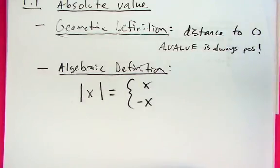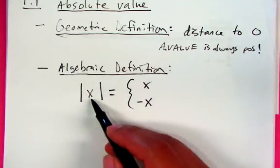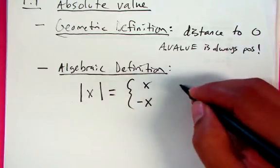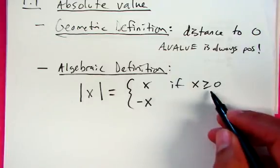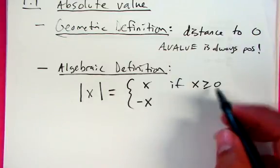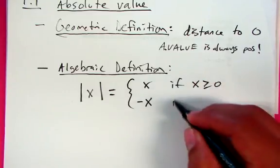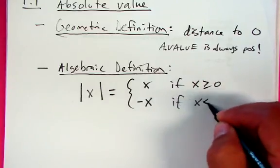The quickest way to explain why we have these two scenarios is because we don't know what x is unless we're told. But we can classify it as two cases: either x is greater than or equal to zero, meaning it's positive or zero, or the exact opposite — x is less than zero, when x is negative.